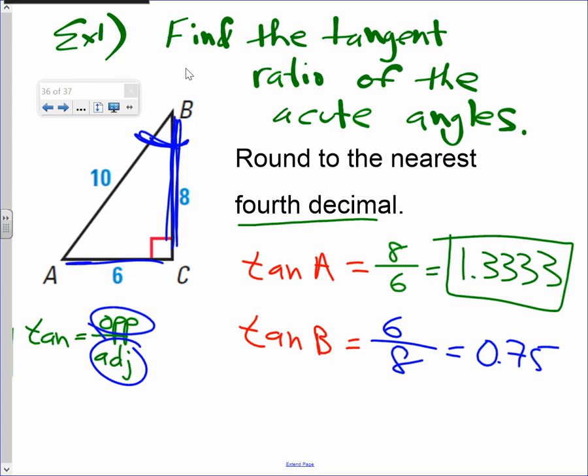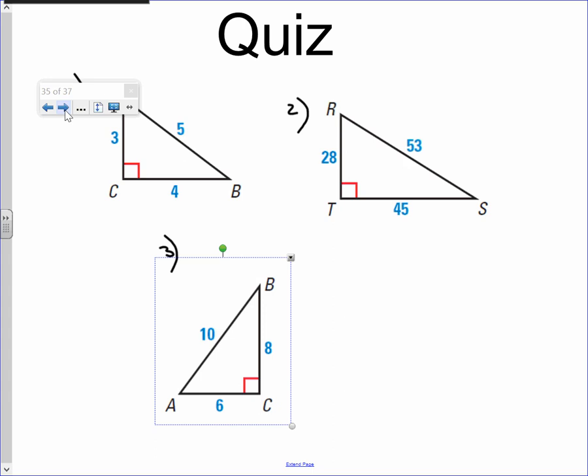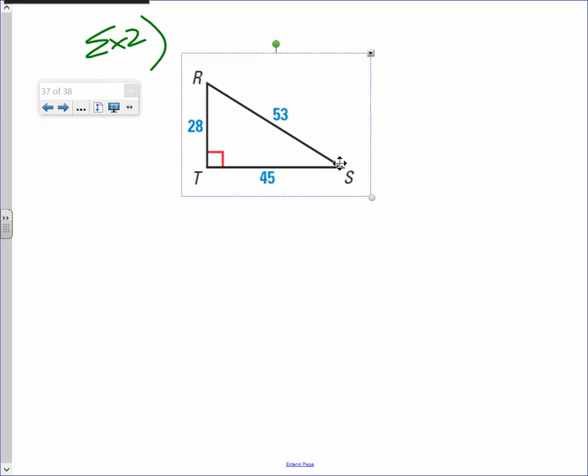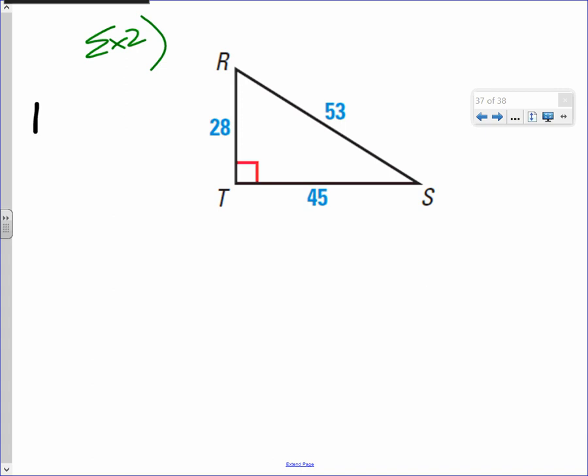Okay, one more example, and we're done. Example two. Copy this one down here. It was a former quiz, but now that you've seen it, probably not. Find the tangent. So, go ahead and find tangent of acute angles. Last example for the day.